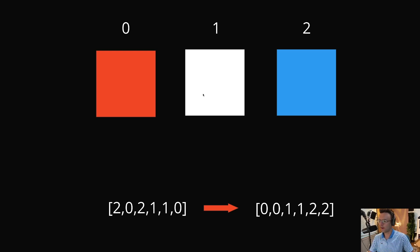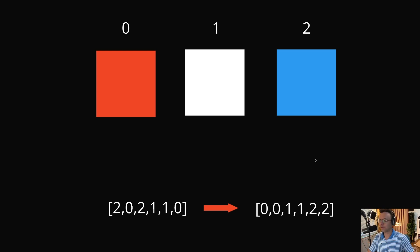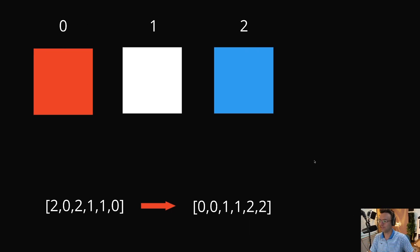Why do they call it the Dutch National Flag? Because these numbers line up with corresponding colors — zeros are red, ones are white, and twos are blue. They want you to line them up so they correspond to the Dutch National Flag in that order. We didn't make up the problem's name; we're just solving it.